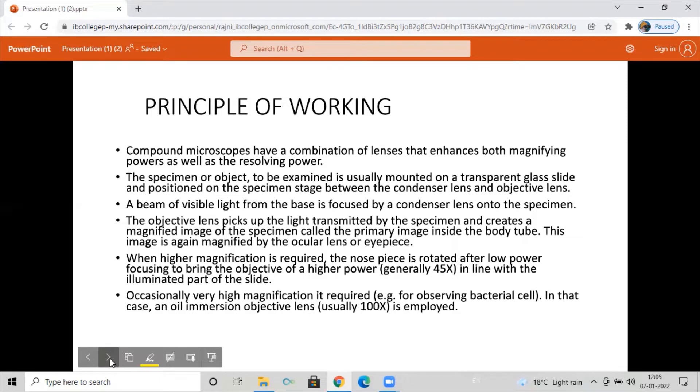A beam of visible light from the base is focused by condenser lens onto the specimen. The objective lens picks up the light transmitted by the specimen and creates a magnified image of the specimen called the primary image inside the body tube. This image is again magnified by the ocular lens or eyepiece.